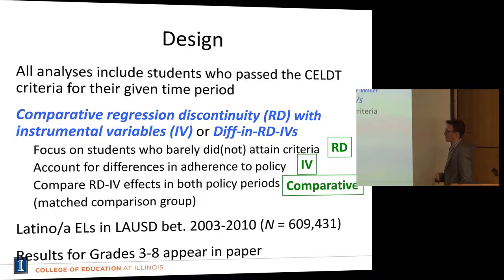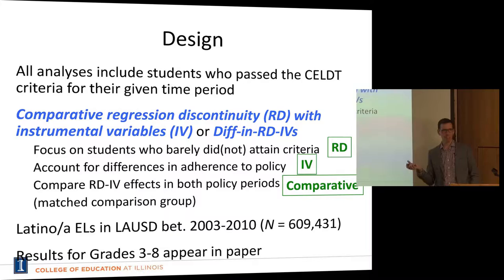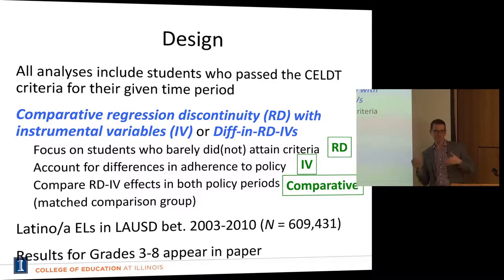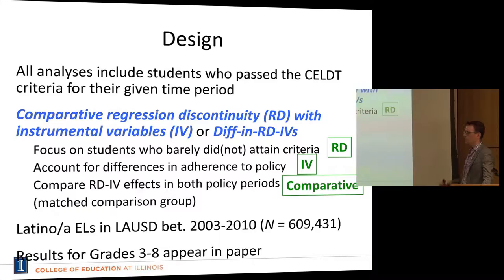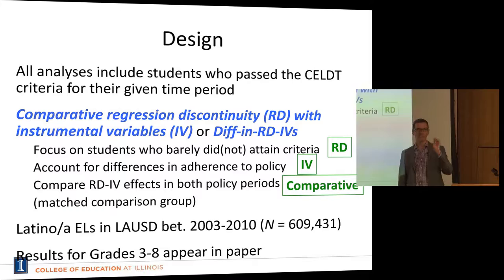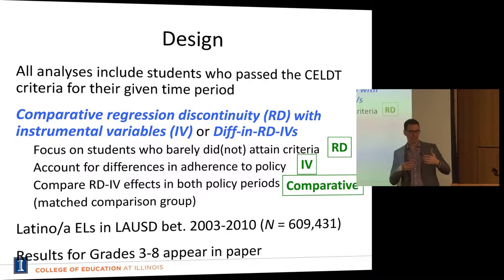It's a comparative regression discontinuity with instrumental variables — or a difference in regression discontinuities with instrumental variables. We're focusing on students who barely did and did not attain the final criterion — that's the regression discontinuity component. There were also differences in compliance — in whether kids would get reclassified if they were reclassification-eligible — in the two different policy periods. To account for those differences, we use an instrumental variable component in each of the two policy periods.